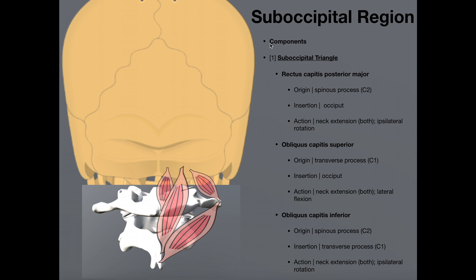So what are the components of the suboccipital region? First, we have the suboccipital triangle. I'm going to switch over to this slide because here I actually have the triangle traced out. Notice that out of the four muscles, only three of them actually comprise the triangle — this medial muscle right here does not. So the suboccipital triangle is composed of three muscles.